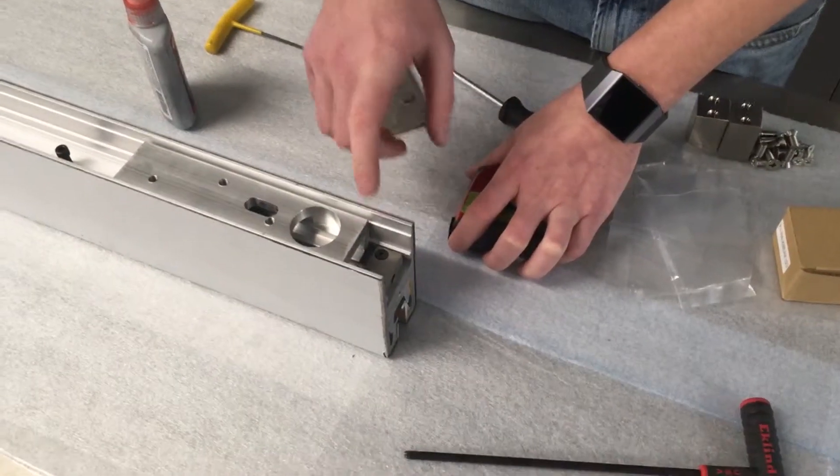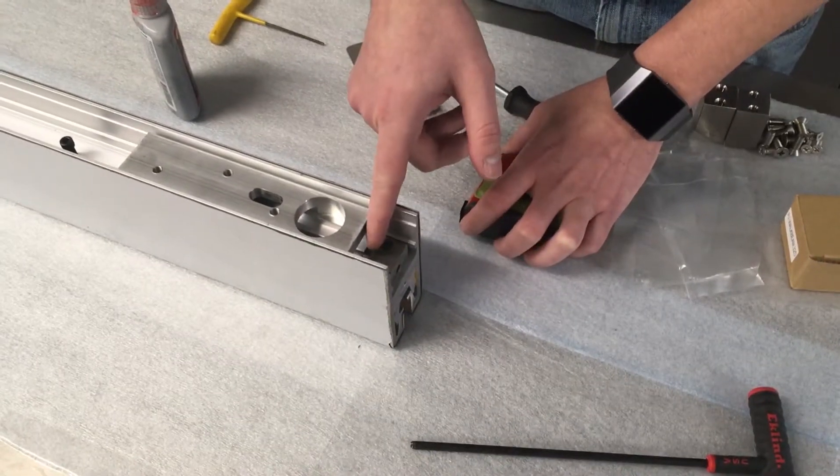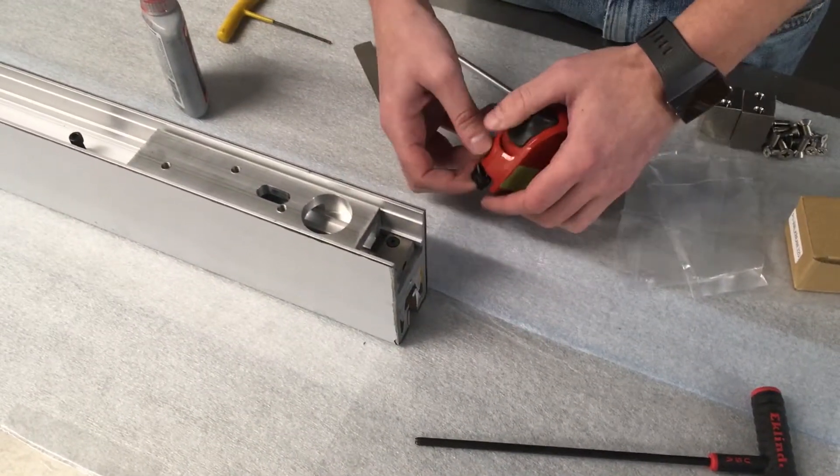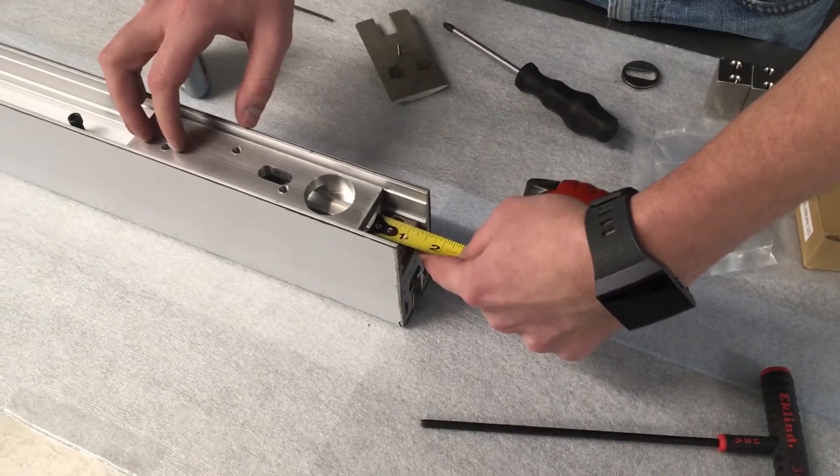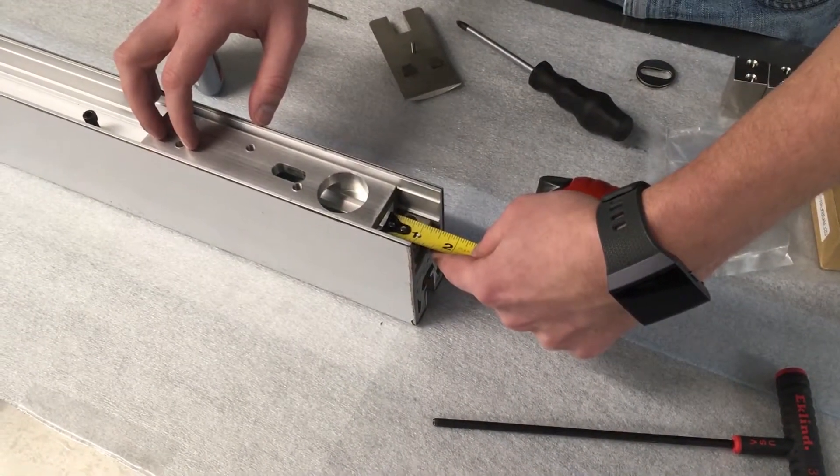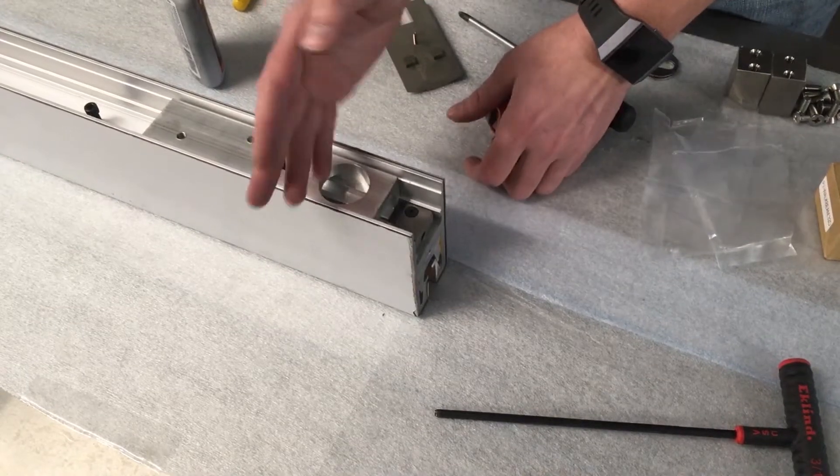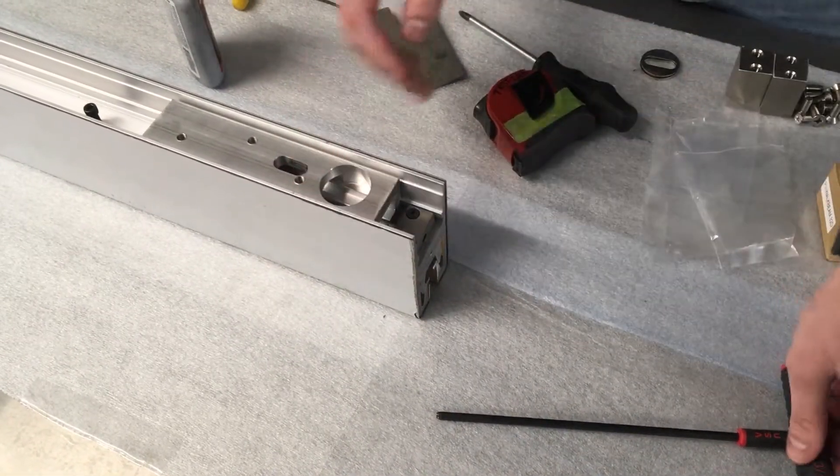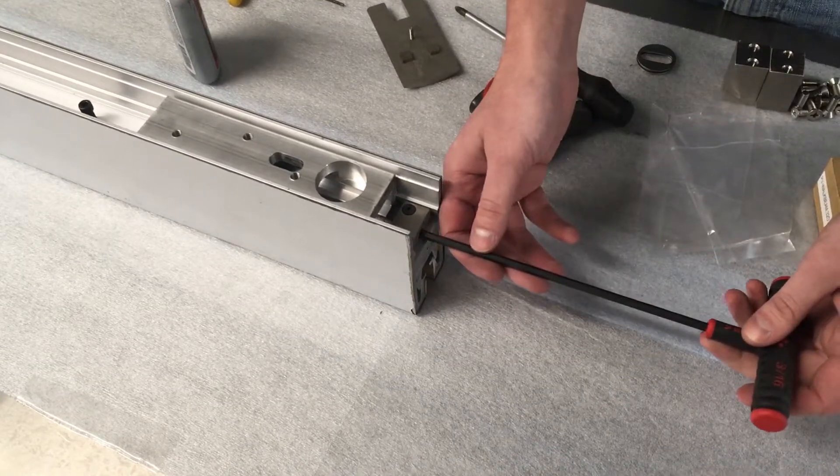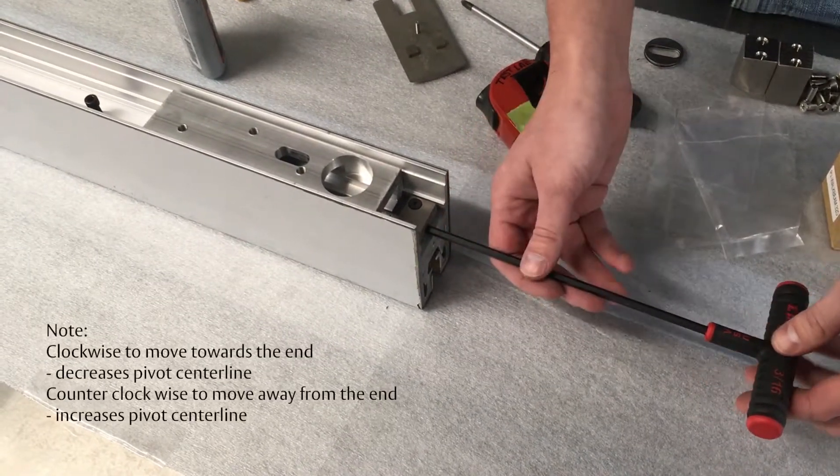The next step is ensuring that the gap between the adjuster block and the PVPL is a quarter of an inch. This is to ensure that the pivot center line is 2 and 5/8ths from the edge of the end cap. If it is not a quarter of an inch, you can adjust the PVPL.